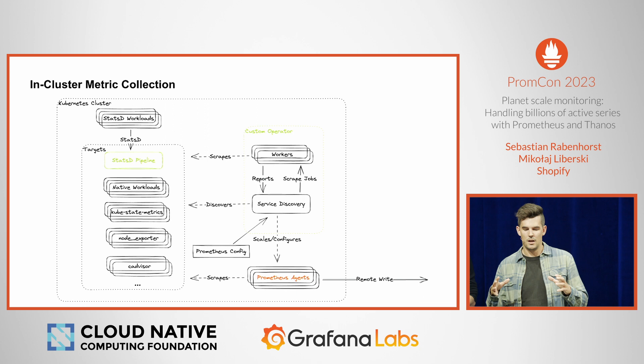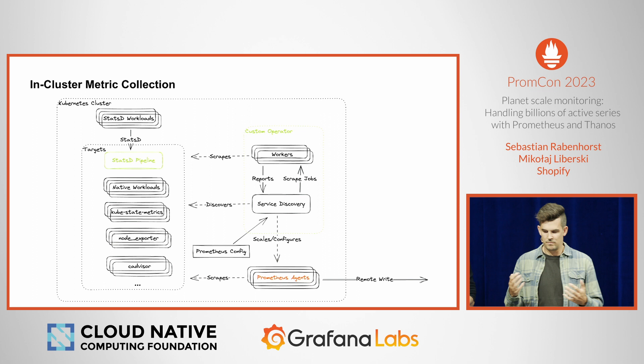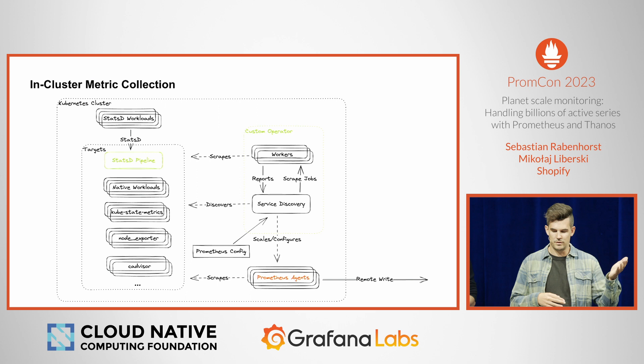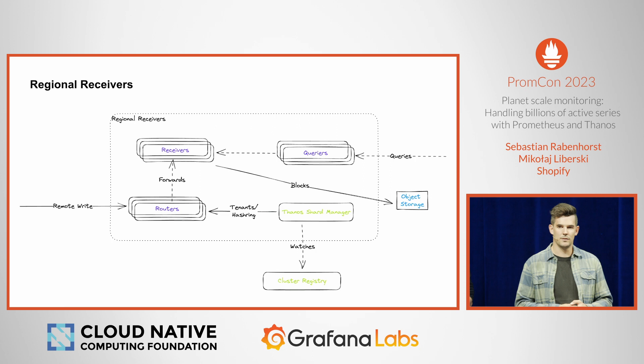And this worked. The Prometheus agents just have standard configuration, then they scrape, and then they remote-write into what we call regional receivers.